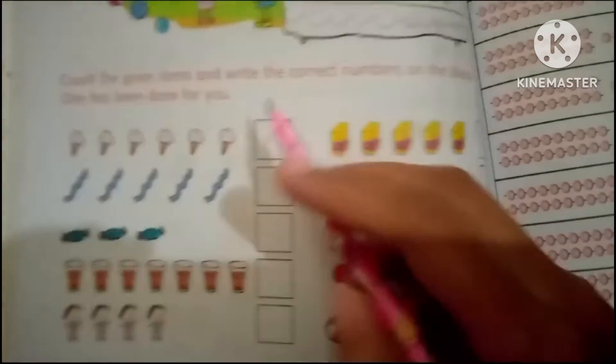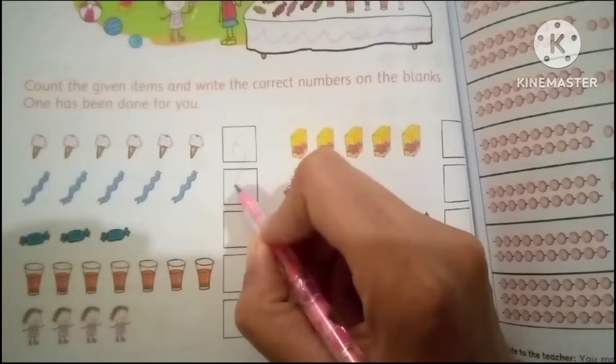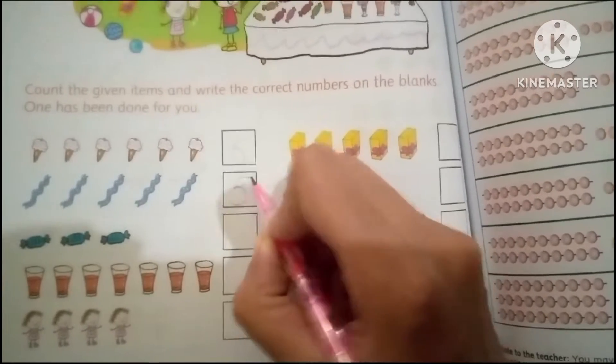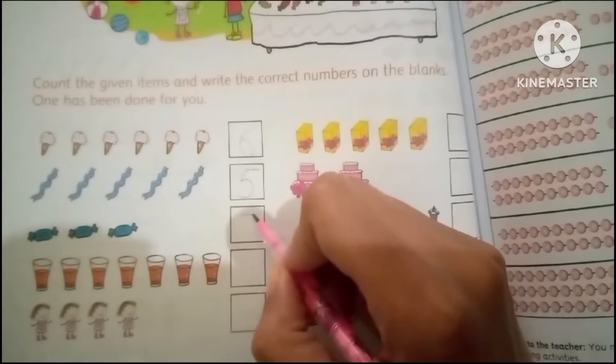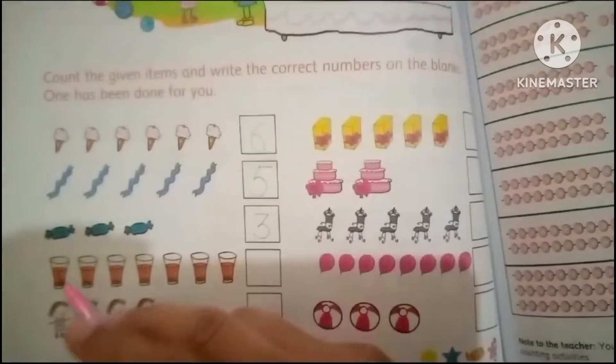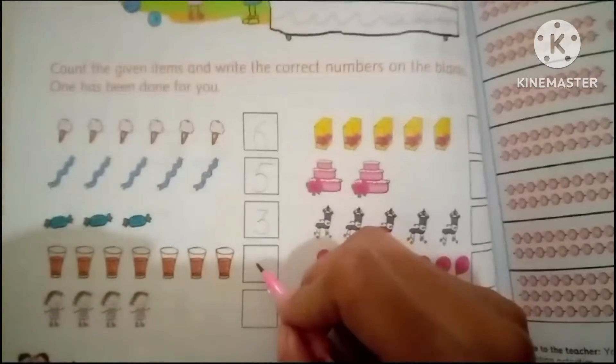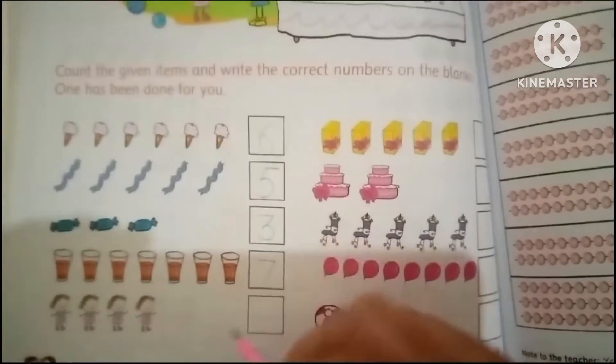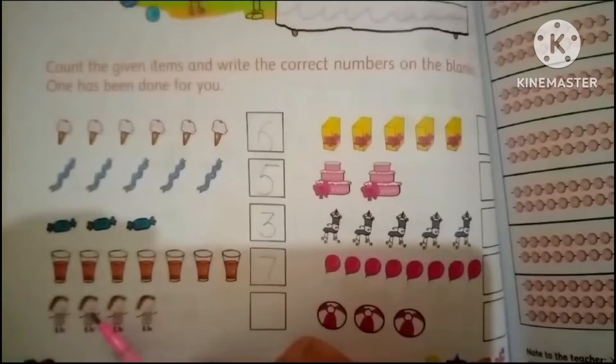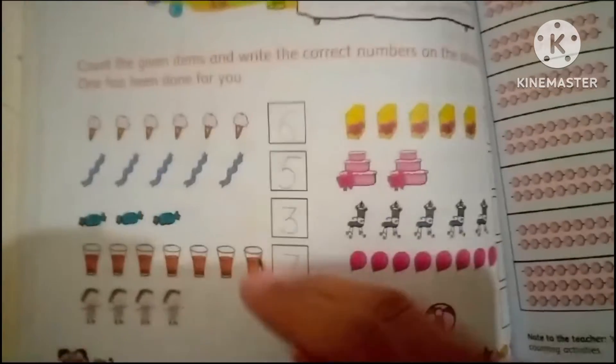Three. Three candies. One, two, three, four, five, six, seven. Seven glasses. One, two, three, four. There are...